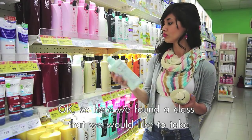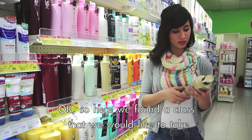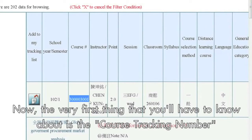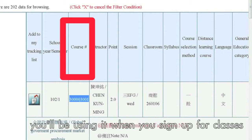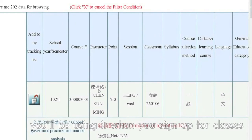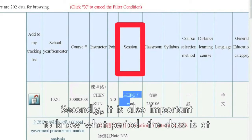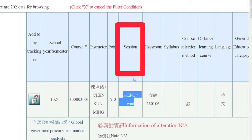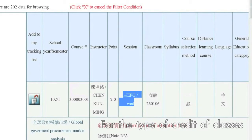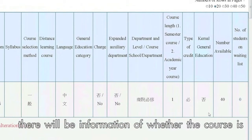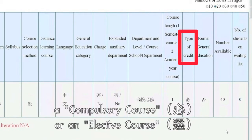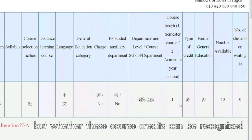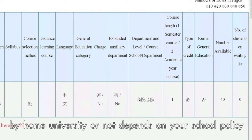So here we found a class that we would like to take. The very first thing you'll have to know about is the course tracking number — you'll be using it when you sign up for classes. Secondly, it is also important to know what period the class is at. For the type of credit, there will be information on whether the course is a compulsory course or an elective course.